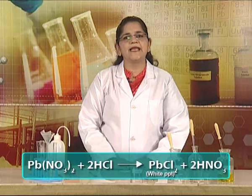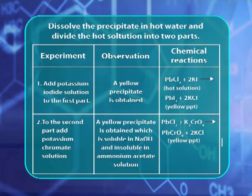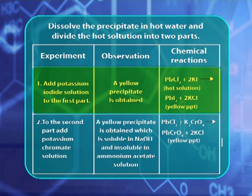Confirmatory tests for lead ion are made by taking the hot solution of lead chloride in two parts. In one part, we add KI solution — the formation of a yellow precipitate shows the presence of lead ion. In the second part, when we add potassium chromate solution, the formation of a yellow precipitate confirms the presence of lead ion.